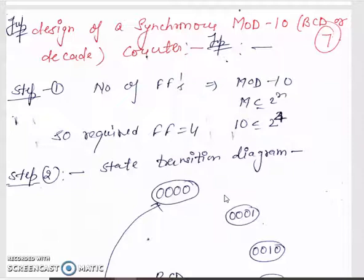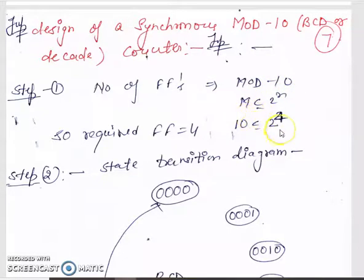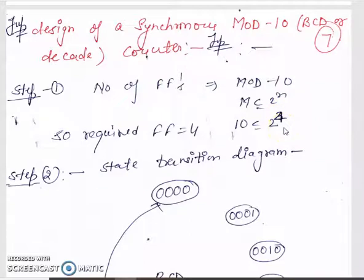BCD means binary-coded decimal, and the state sequence is 0 to 9 — that is 10 states. For the number of flip-flops: 10 ≤ 2^n. Since 2^3 = 8, which is less than 10, we use 2^4 = 16, so 4 flip-flops are required. The state transition diagram counts from 0 to 9.